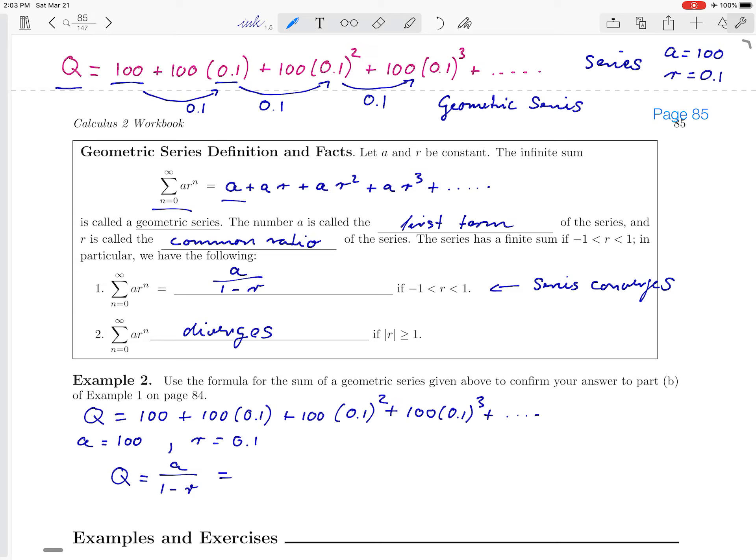And now we can substitute the particular values. So a is 100 and in the denominator, we have 1 minus r, 1 minus 0.1. And when you punch that into your calculator, you can confirm that this really is 111.1111 going on forever. So this confirms our answer. In the previous video, we were just guessing. Now we have confirmed our answer.